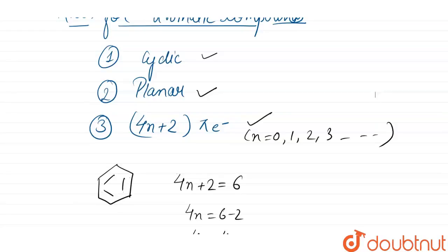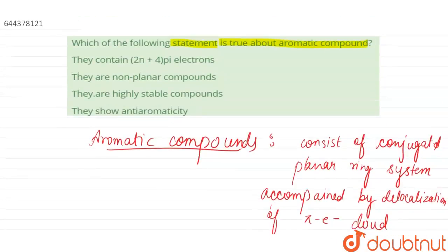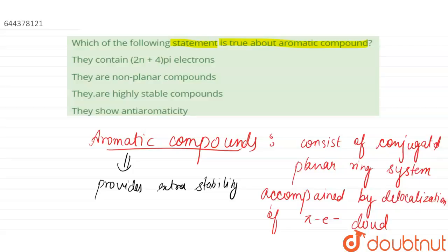Aromatic compounds also provide extra stability to the molecule due to the ability of the electrons in the pi orbital to delocalize. It is due to this delocalization that aromatic compounds provide extra stability.